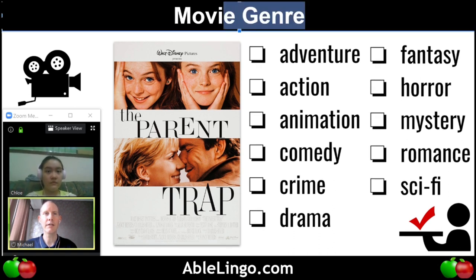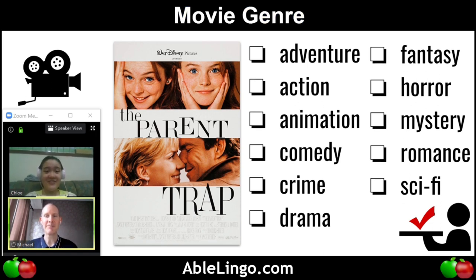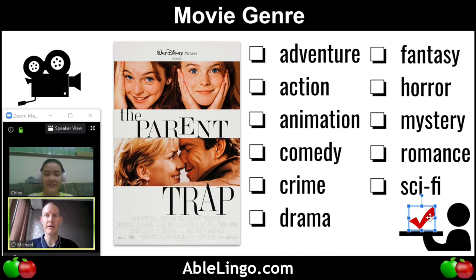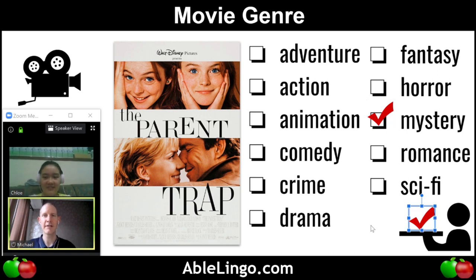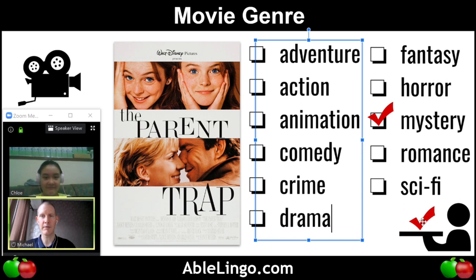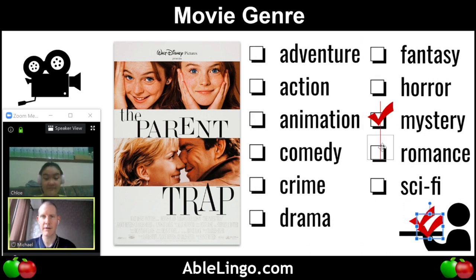Let's do movie genre. Can you say movie genre? Movie genre. I think it's French — genre. So we have adventure, action, animation, comedy, crime, drama, fantasy, horror, mystery, romance, sci-fi. What do you think? I think it's mystery. Okay, and why do you say mystery? Because it's like a mystery why their parents actually got a divorce. Maybe. And romance — that's probably on the list.